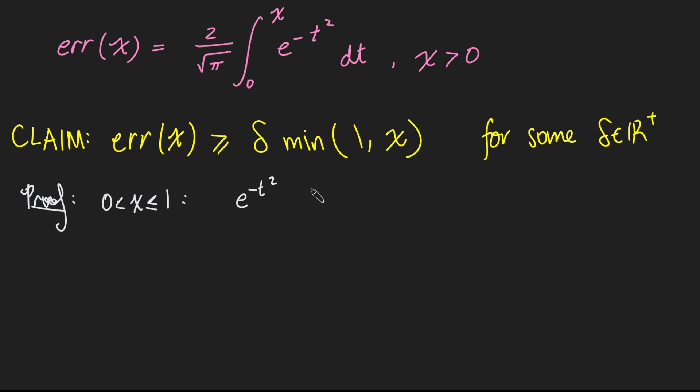And so e to the negative t squared will be at least e to the negative 1 squared, because we're saying x is at most 1, and because e to the negative t squared is decreasing. And this thing here is just e to the negative 1. Now, if we just integrate both sides between 0 and x dt, and same thing over here, dt,